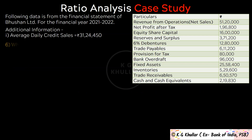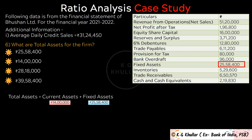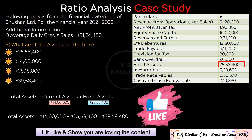The next question is: What are total assets for the firm? Total assets = current assets plus fixed assets. Current assets are Rs. 14,00,000 and fixed assets are Rs. 25,58,400, so total assets equal Rs. 39,58,400. The correct option is option D.